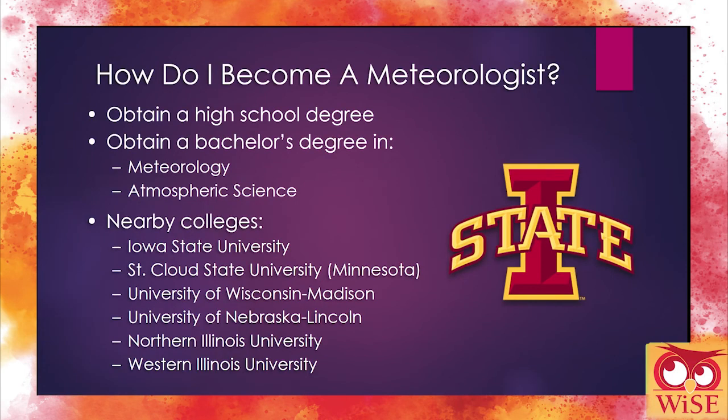So how do you become a meteorologist? First things first, you've got to get your high school degree. Then afterwards, you need to get a bachelor's degree — your undergraduate, your basic normal college education — in either meteorology or atmospheric sciences. The name differs between different universities, but they're fundamentally the same kind of program.